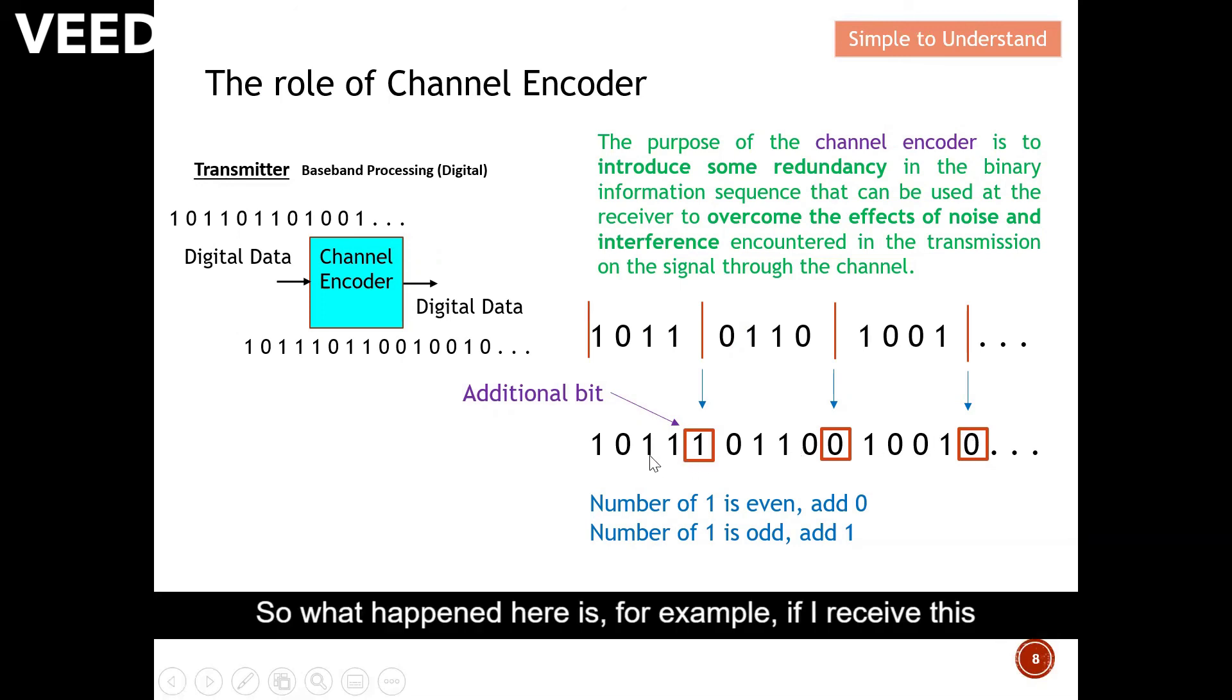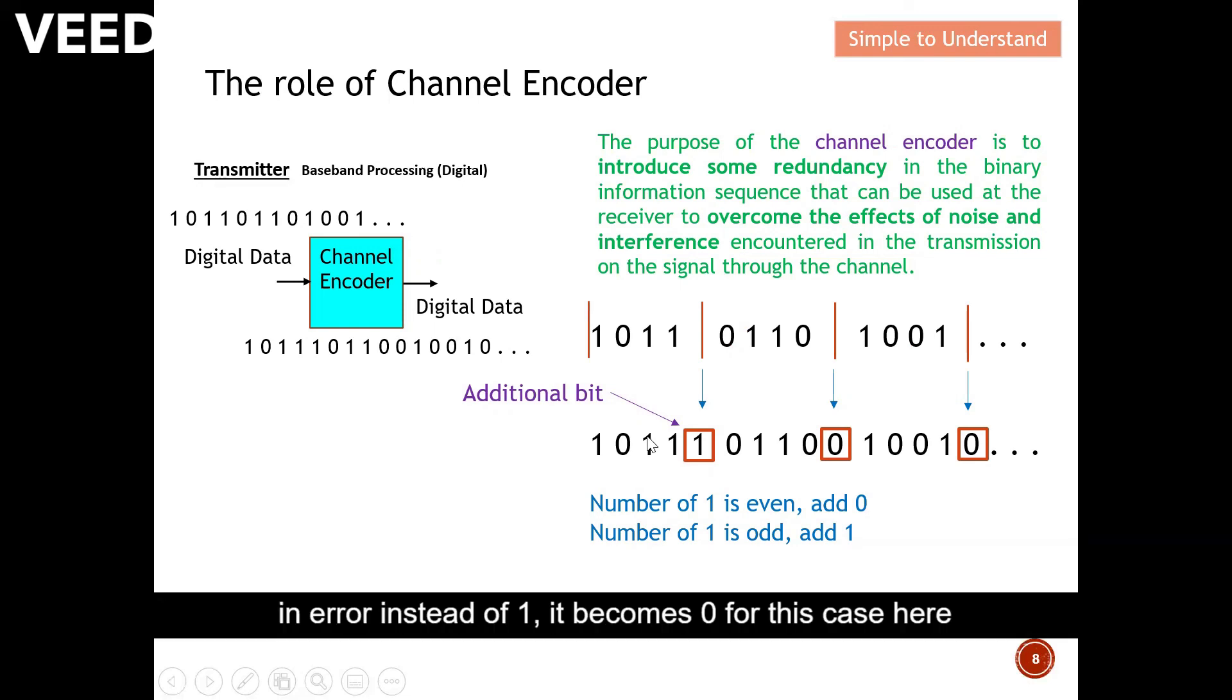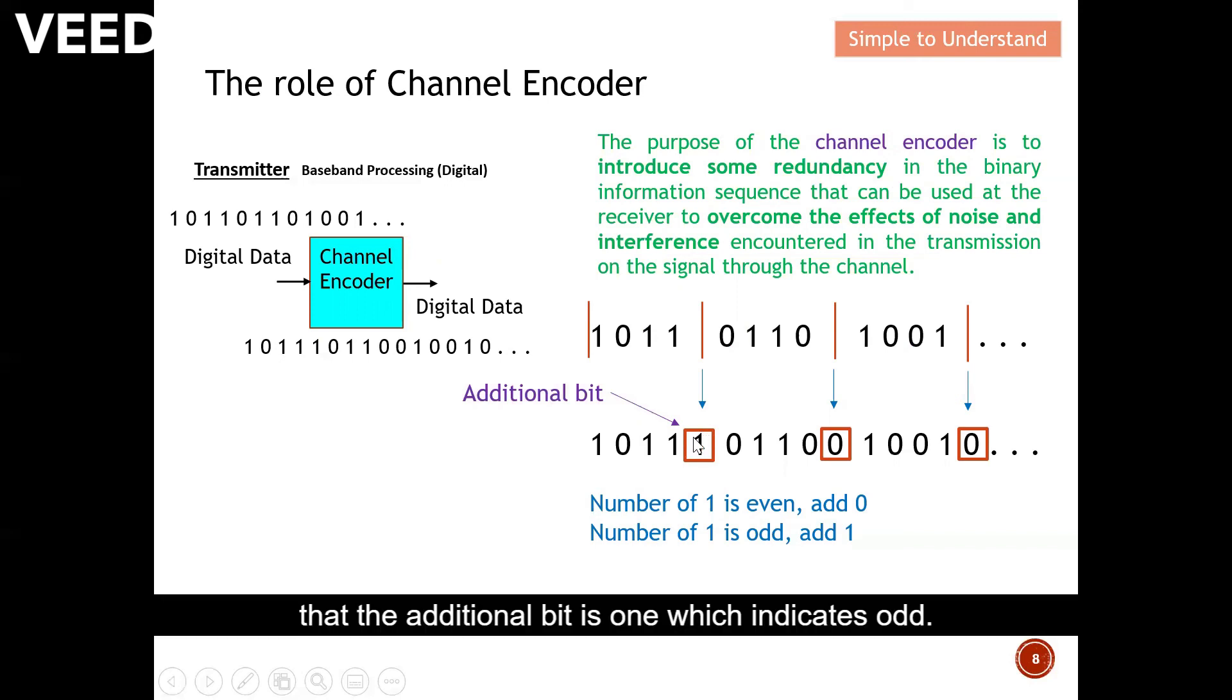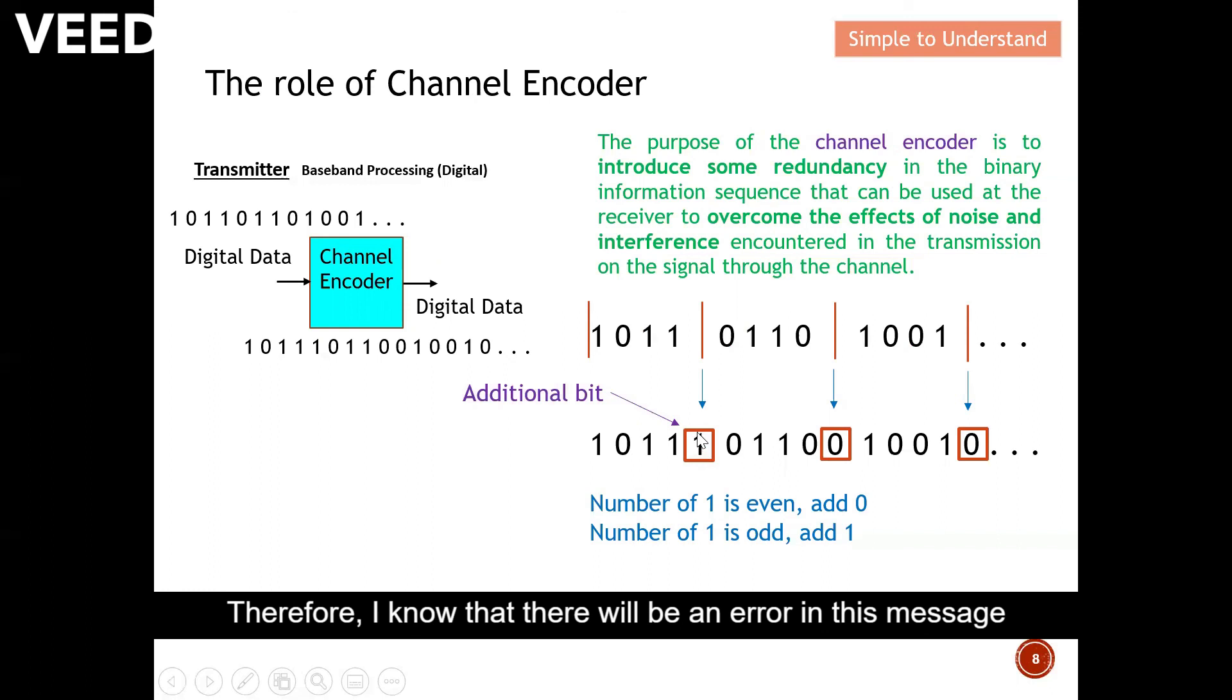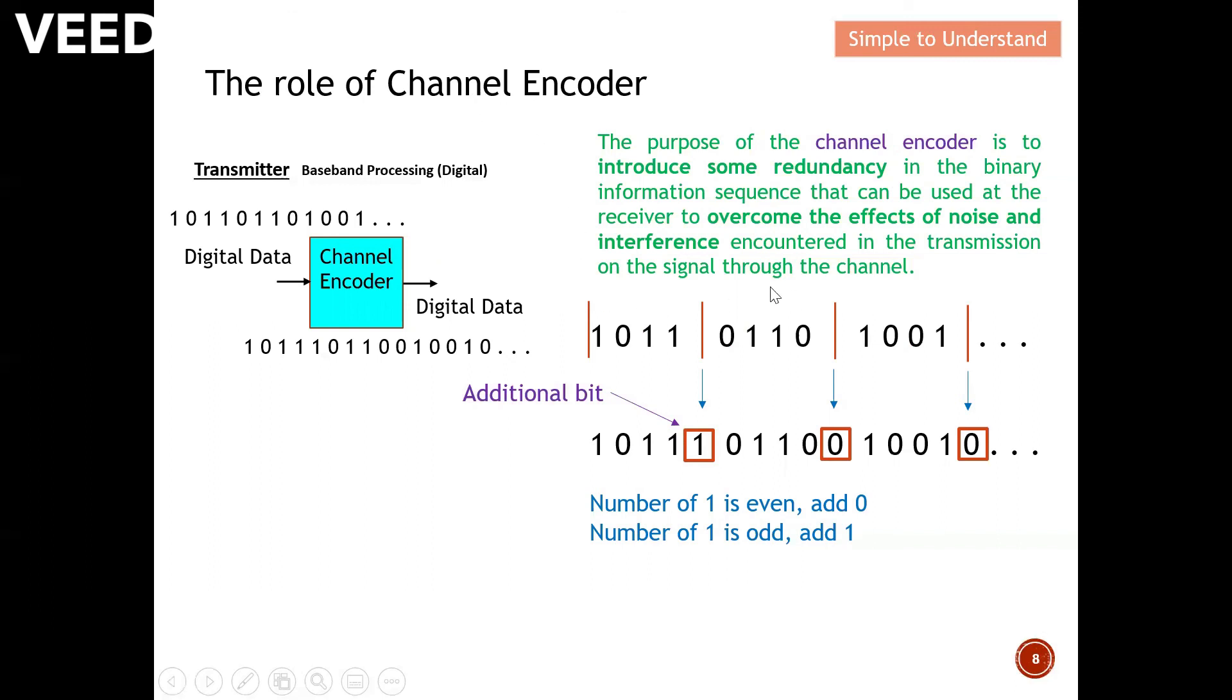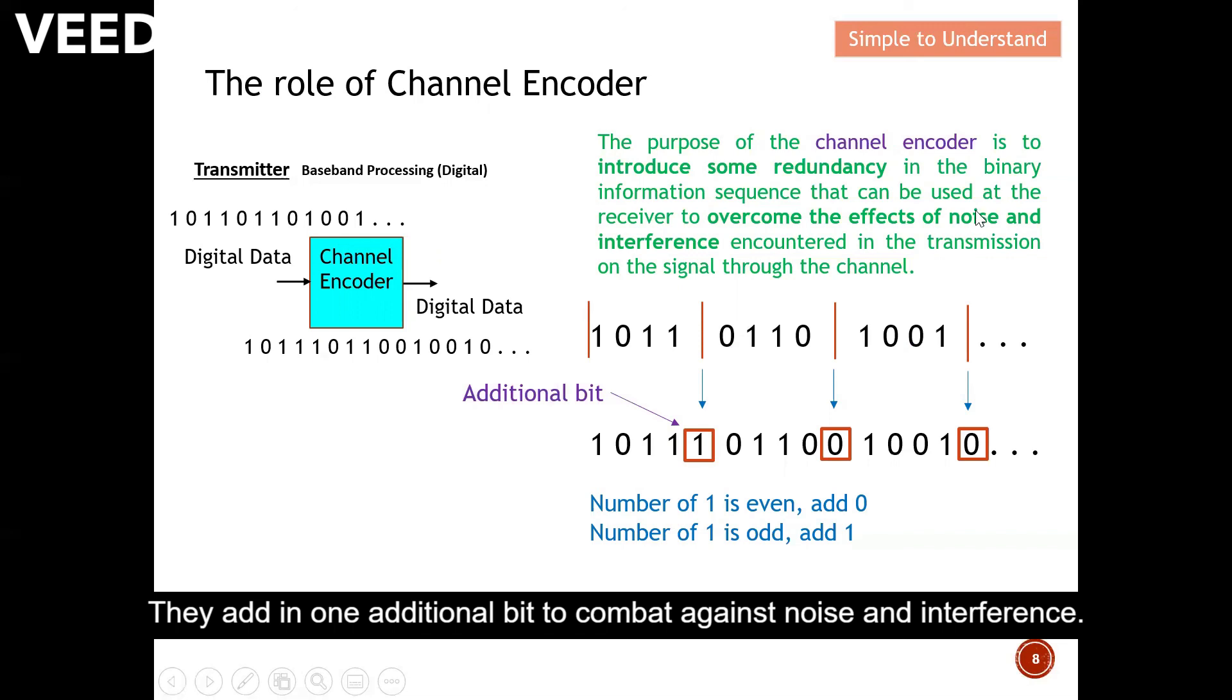So what happens here is, for example, if I receive this in error instead of one, it becomes a zero for this case here. And when I count the numbers of bits, it's actually even. And I realize that the additional bit is a one which indicates odd. So therefore, I know that there will be an error in this message. And I can easily ask the transmitter to resend this message again. So this is the role of channel encoder. They add in one additional bit to combat against noise and interference.